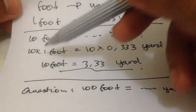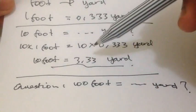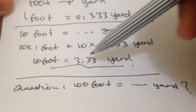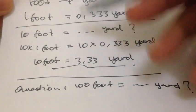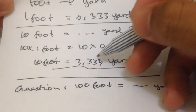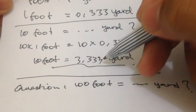Alright, so we have 10 foot is equal to 3.33 yards. Just stop it in the third three. Well, that's the answer.